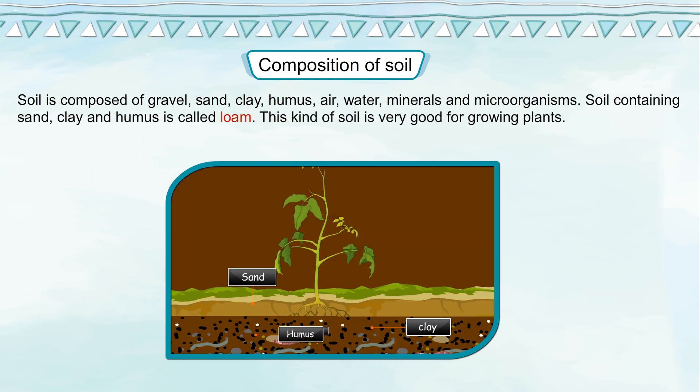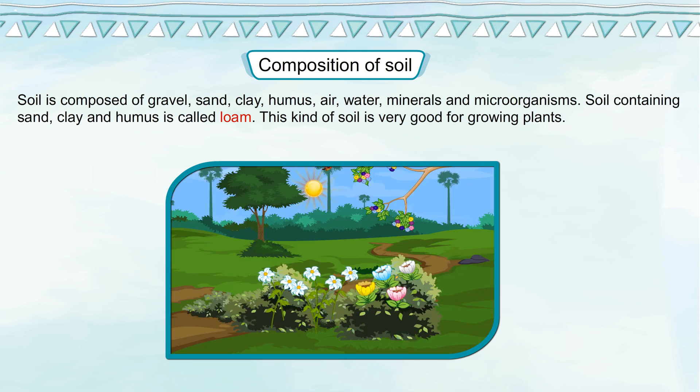Soil containing sand, clay and humus is called loam. This kind of soil is very good for growing plants.